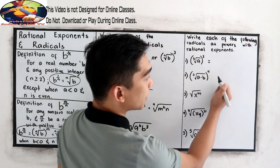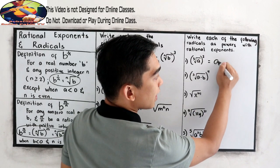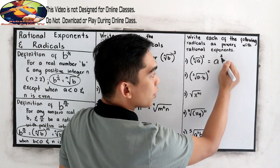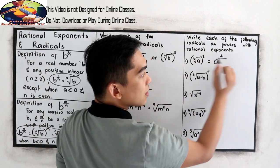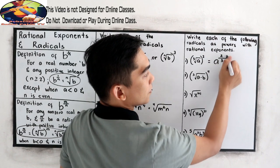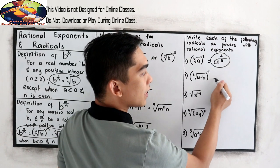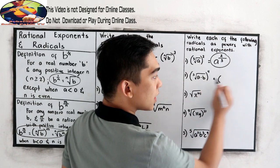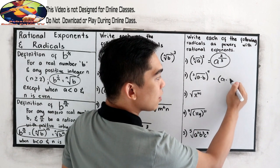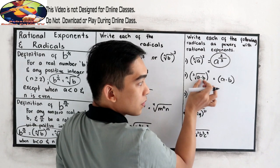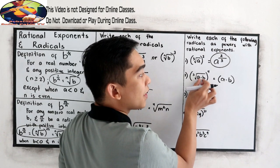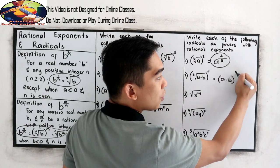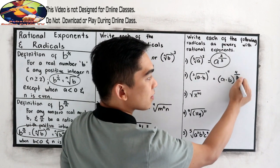So we have here, that is A, our base, 2, our exponent, over our index is 3. Next, quantity A minus B, the expression inside our radical sign, our exponent numerator will be 4 over index 3.